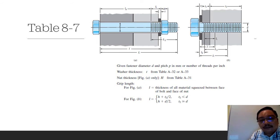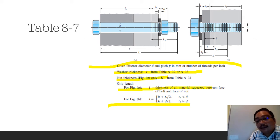This is the Table A7, given the past internal diameter D and pitch in millimeter and number of threads per inch. Washer thickness given from the table A32, and nut thickness and grip length and everything. This is what you want to refer when we are doing the calculation in the next video.